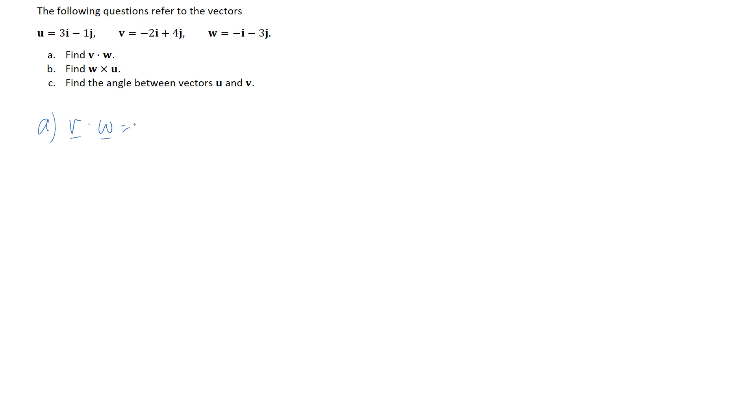So we know for the dot product what we're doing is we're taking the corresponding components between our two vectors, we multiply them together and then add for a total. So here our x component for each one we've got negative two for v and negative one for w so we multiply them.